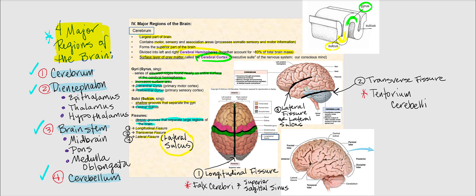The longitudinal fissure is what separates our cerebrum into the left cerebral hemisphere and the right cerebral hemisphere. Along this longitudinal fissure, we find the falx cerebri, which is one of those dural folds mentioned earlier. In addition to the falx cerebri, we also find the superior sagittal sinus, which is one of those dural venous sinuses.